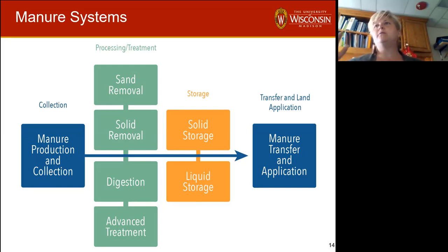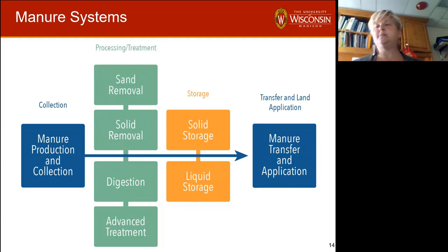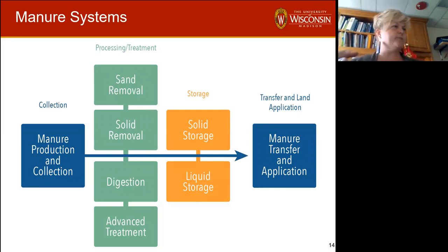The first thing we like to talk about is that manure irrigation is just a component of a manure system — it's the land application component. Manure irrigation is a selection of practice and it's going to be compared to other manure application practices. This wasn't manure irrigation or nothing. Typically all of the fields in Wisconsin that have irrigation equipment, if they didn't get irrigated with manure, they'd get traditional or other types of manure application applied to them.